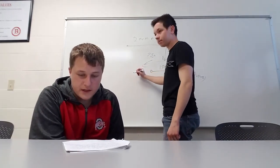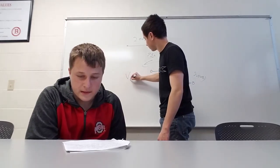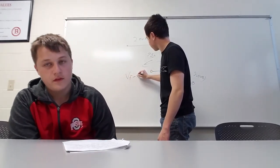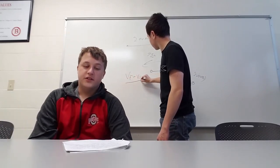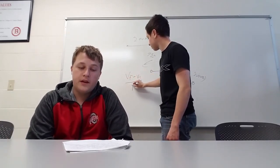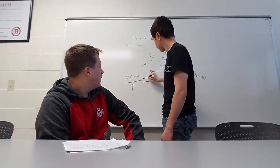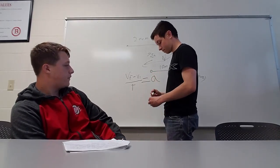To find the acceleration, you must take the final velocity and subtract the initial velocity from it. Once you have that answer, divide it by the amount of time it took. That's the formula for acceleration.